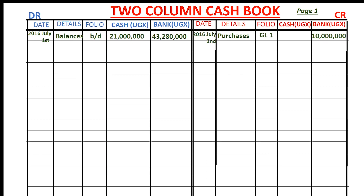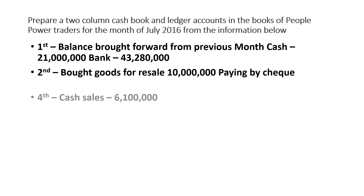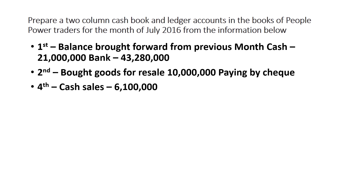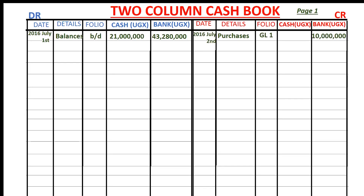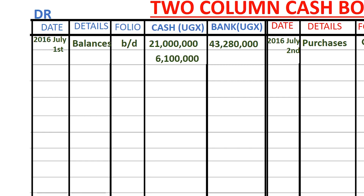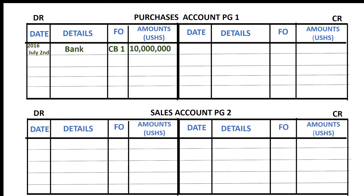On 4th, sales of $6,100,000 for cash — cash sales. The two items affected are sales and cash. When we make sales, cash flows into the business. We debit the cash book by putting $6,100,000 in the cash column on the debit side. The other item affected is sales. Remember, increases in sales are credited.